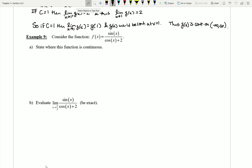Now let's turn our attention to example number 9. Here we're going to consider the function f of x, which is the sine of x over the cosine of x plus 2. We want to state where this function is continuous.